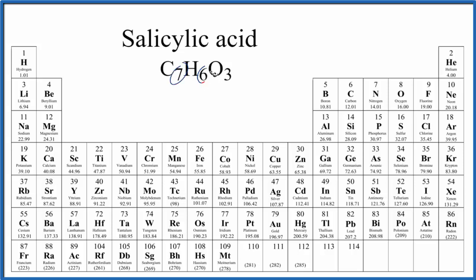Seven atoms of carbon, six atoms of hydrogen, and three oxygen atoms. So we'll find each of these on the periodic table so we can find the molar mass of salicylic acid.